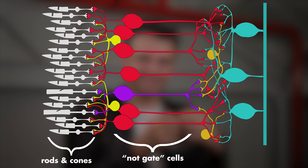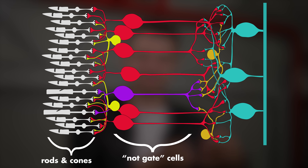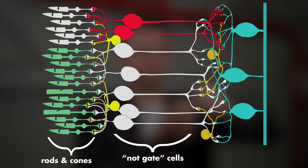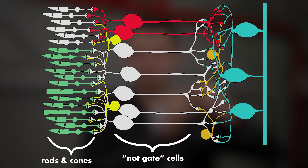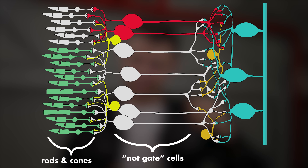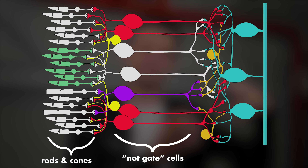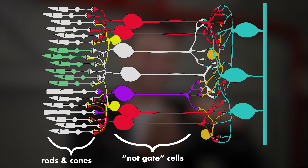The next cell in the sequence — the next cell down the neurological chain from the rods and cones — is like a NOT gate. It's called a bipolar cell. When the rod or cone cell is on, the bipolar cell is off, and when the rod or cone cell is off, the bipolar cell is on. That way, when light comes in, it corresponds to an on signal.